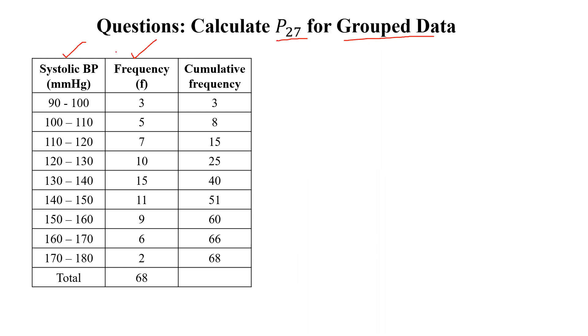These two columns are given, and we are going to calculate P27, then we have to calculate cumulative frequency column. As we know, it's easy steps for cumulative frequency column. We can calculate easily - 3 is the same value.